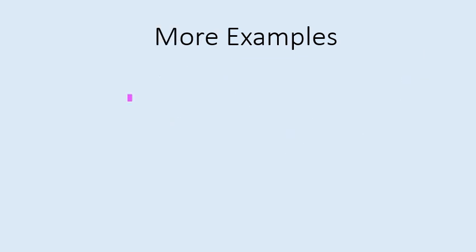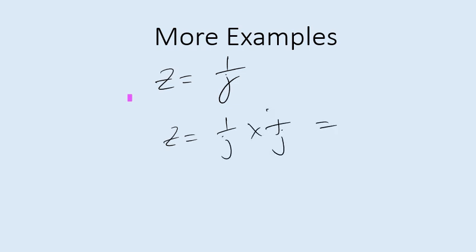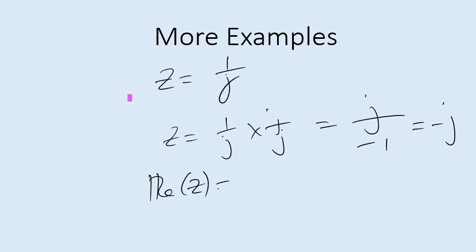How about z = 1/j? How do you find the real and imaginary parts? Simply multiply top and bottom by j: (1/j) × (j/j) = j/(j²). Now j × j = -1, so this becomes j/(-1) = -j. Therefore the real part of 1/j is zero — there is no real part — and the imaginary part of z is -1. Easy.